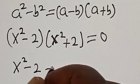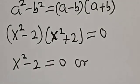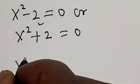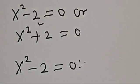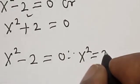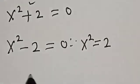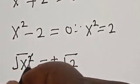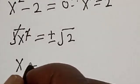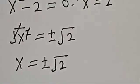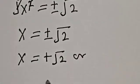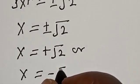Case one: x squared minus 2 is equal to 0. Therefore, x squared is equal to 2. Let's take the square root of both sides. The square root of x squared is equal to plus or minus the square root of 2. So x is equal to plus or minus the square root of 2 — that is, x equals positive root 2 or x equals negative root 2.